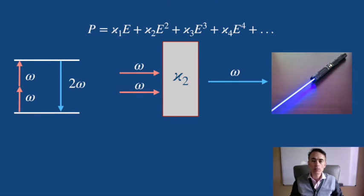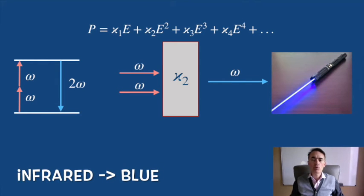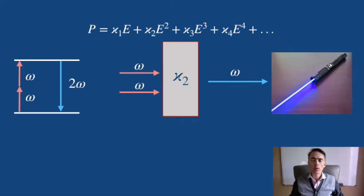We don't have a semiconductor gain medium that emits photons in the blue. But these infrared photons through second harmonic generation at a non-linear material are combined to generate twice the frequency and create a blue laser.